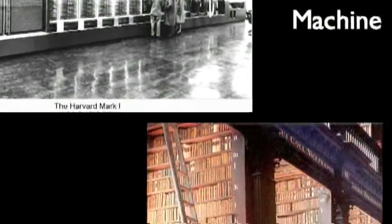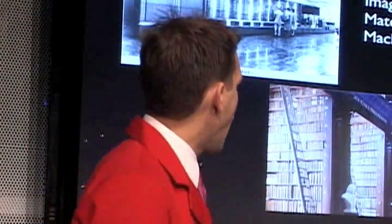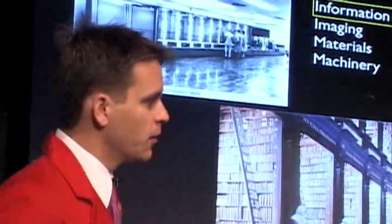Data was stored almost exclusively in libraries — we printed paper books, bound them together, put them on shelves. Feynman suggested that we could radically improve our methods of storing information if we could make tiny imprints or impressions on thin metal or plastic discs. Which, in fact, is exactly what we do today.